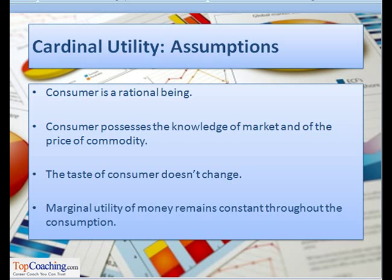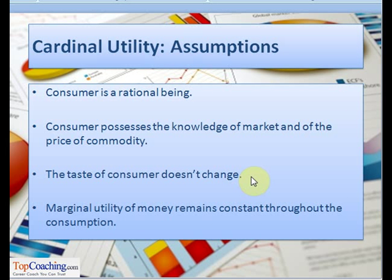There are certain assumptions to be made while assessing the cardinal utility of a commodity. First, the consumer is considered to be a rational human being. Second, the consumer possesses knowledge of the market and of the price of the commodity. Third, the taste of the consumer doesn't change. And lastly, the marginal utility of money must remain constant throughout the consumption of the commodity.